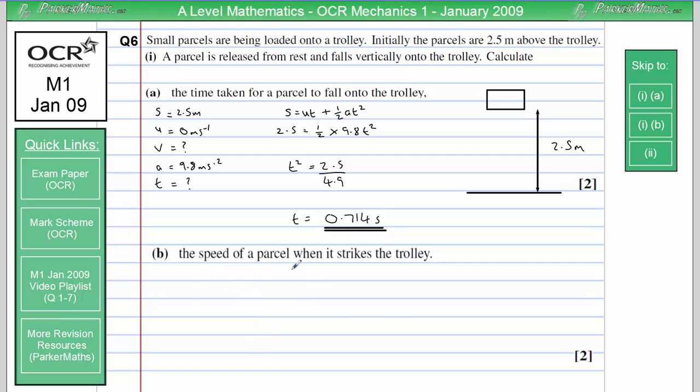And we get 0.714 to three significant figures. In part two, we want the speed of a parcel when it strikes the trolley. Well, this time we're trying to work out V, the final velocity. So we need an equation that involves S, U, V and A. The one we're looking for is V squared equals U squared plus 2AS.